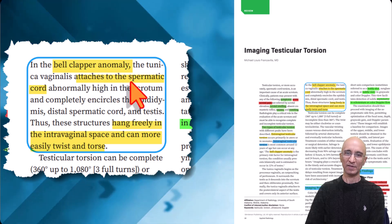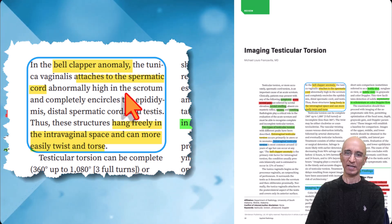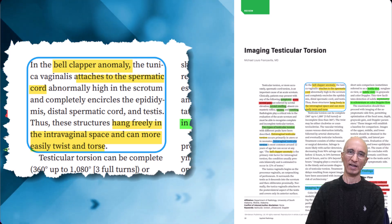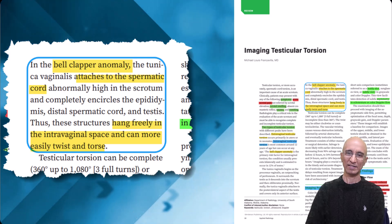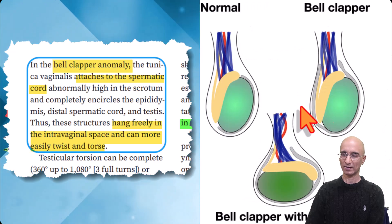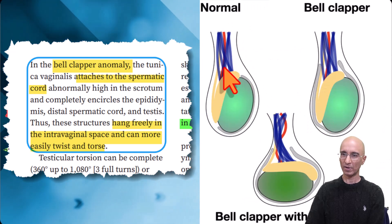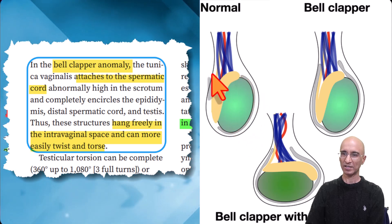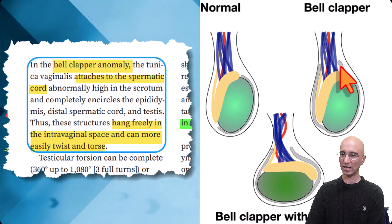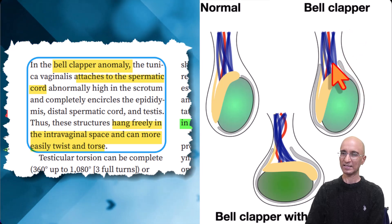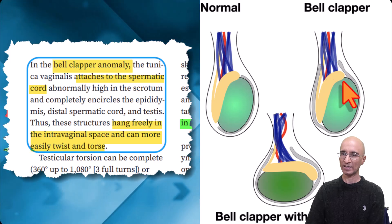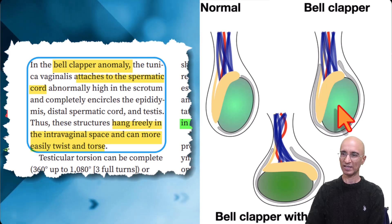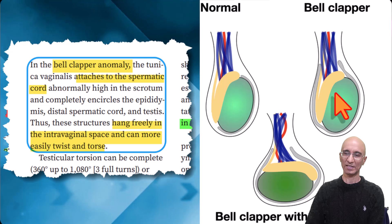In this variant, the tunica vaginalis attaches high in the spermatic cord. This leads to a freely floating epididymis, distal spermatic cord, and testis within the intravaginal space. As shown in this illustrative image from the Radiopaedia website: in normal anatomy the tunica vaginalis does not extend into the spermatic cord, whereas in bell clapper deformity the tunica vaginalis inserts high into the distal spermatic cord, leading to free floating of the epididymis and testis within the tunica vaginalis — akin to a clapper rattling within a bell.